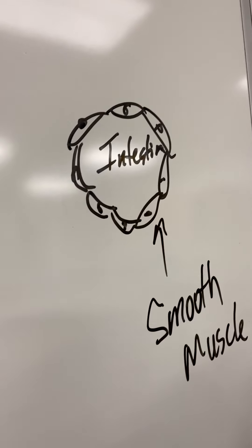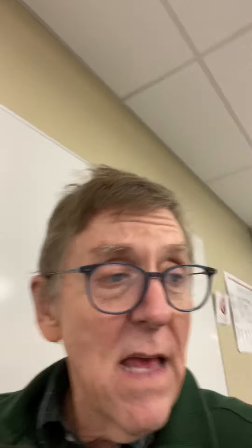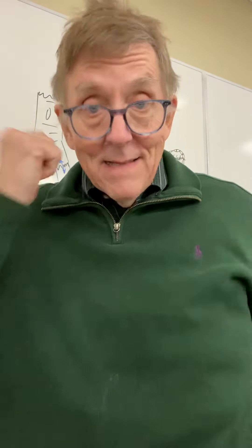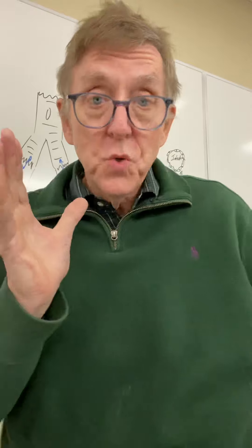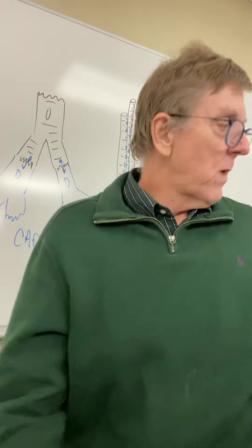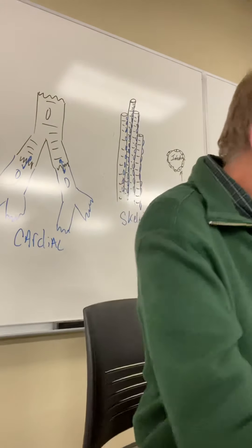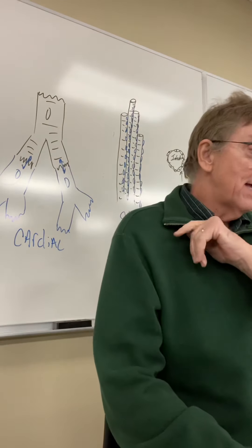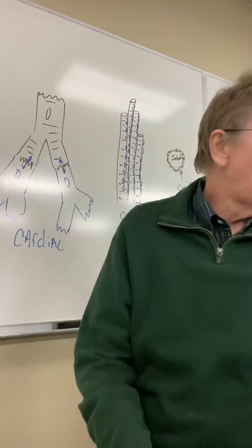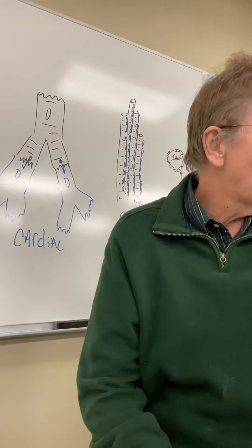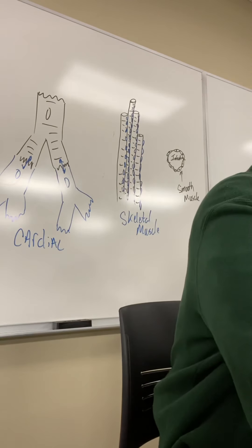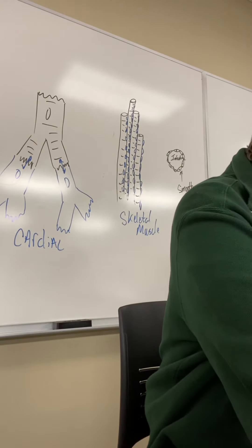Each smooth muscle cell has a little pointy end with a nucleus in the middle. They don't look like a lot on their own, but since the other two are so unusual, we need to show all three. Smooth muscle cells lack striations, they're mononucleate, they line hollow organs, and they're involuntary.